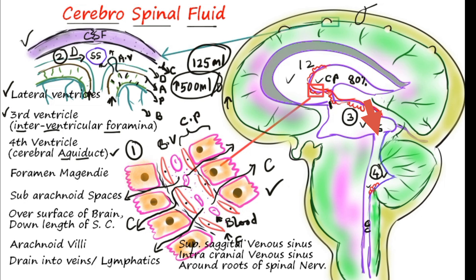From there the CSF goes into the fourth ventricle, and then escapes into the subarachnoid spaces around the brain via foramina — the foramen of Magendie and Luschka. These two foramina are present just below the cerebellum, from where the CSF escapes into the subarachnoid spaces and moves upward and downward along the brain and spinal cord.